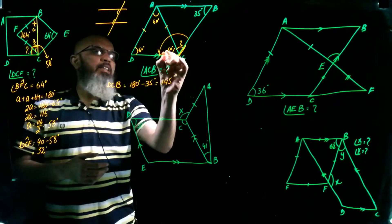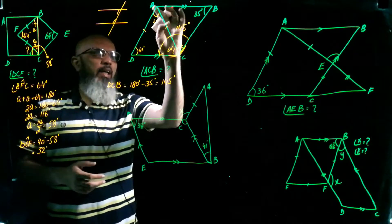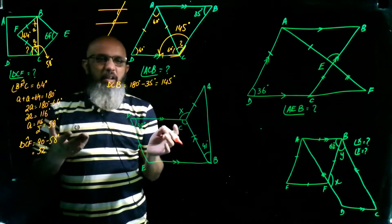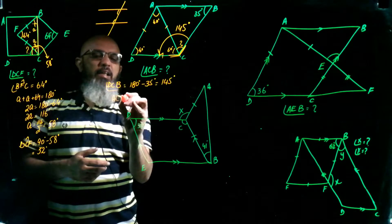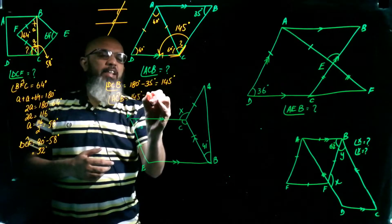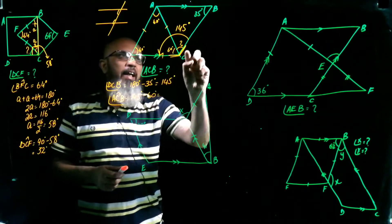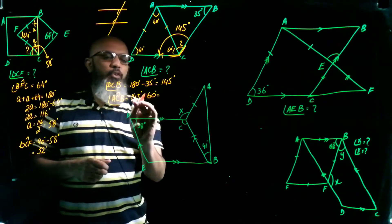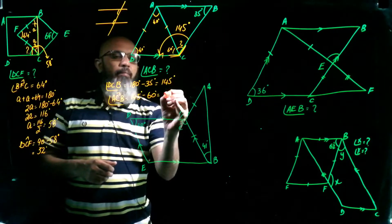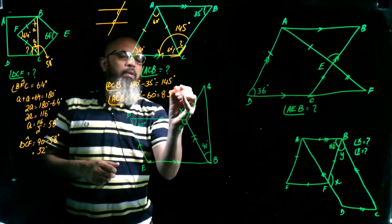The whole angle DCB is 145 degrees, but we need only angle ACB. Since angle ACD = 60 degrees, we subtract: 145 - 60 = 85 degrees. So angle ACB = 85 degrees.